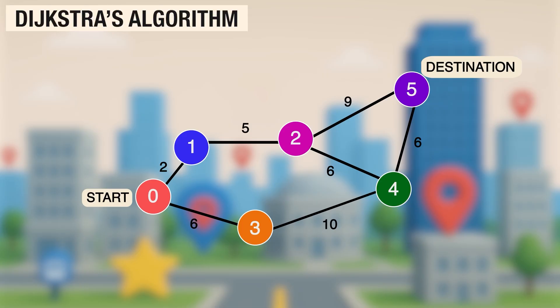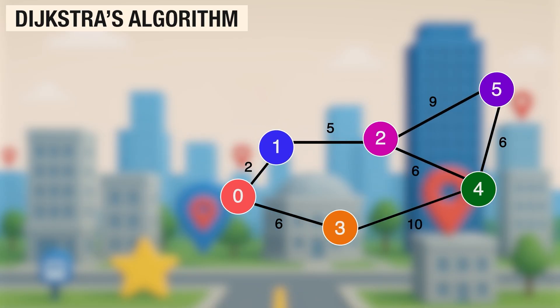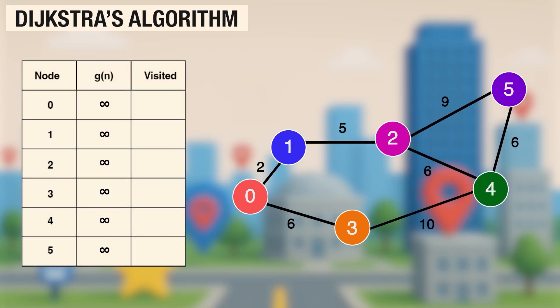We'll start with Dijkstra's algorithm. It works by keeping a table of the cheapest cost so far to reach every point. Here, you can consider the cost to be the distance between two intersections. The cost is called the G value. Infinity just means we haven't found a way to get there yet. We start here. Cost to reach node 0 is 0. For every other node, we don't know the cost yet, so we write infinity. We visit node 0 first. From 0, we can go to node 1 for cost 2 and node 3 for cost 6. So we write 2 and 6 in the table and mark node 0 as visited.